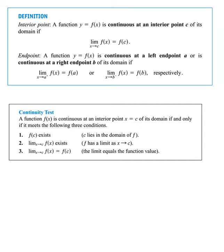Previously with limits, we weren't worried about open circles — we only checked how close the function gets to a value. But with continuity, we upgrade it to require the function value to match the limit. That way, we can use limits to define continuity. These three conditions must all be met for a function to be continuous in its domain.